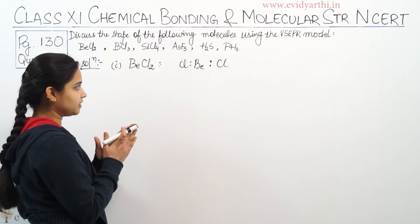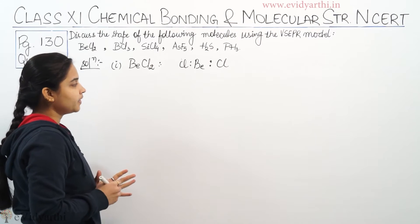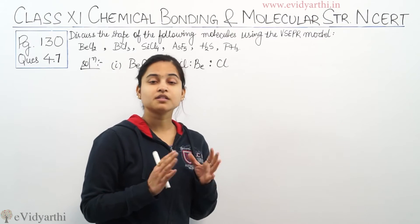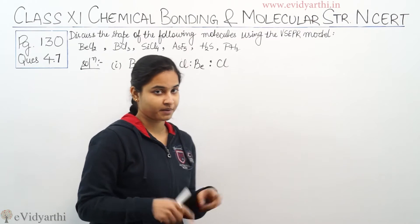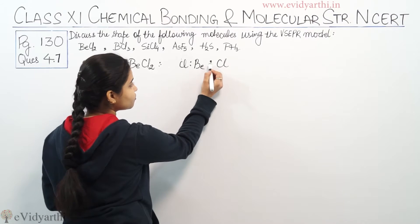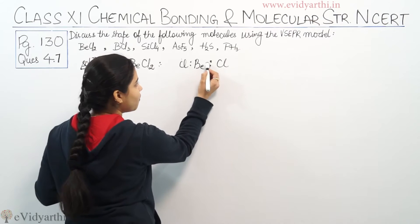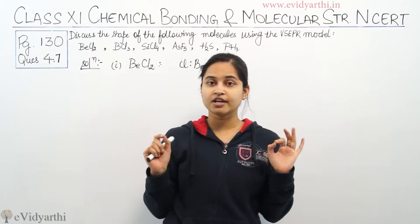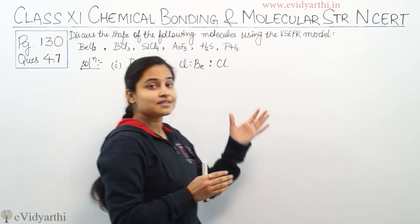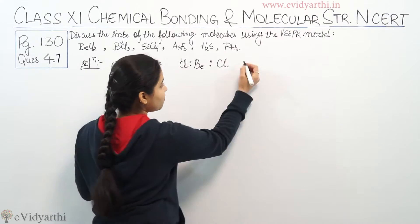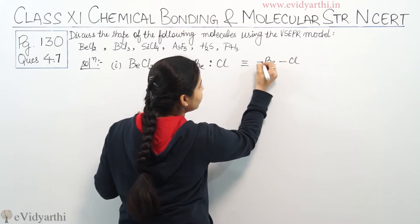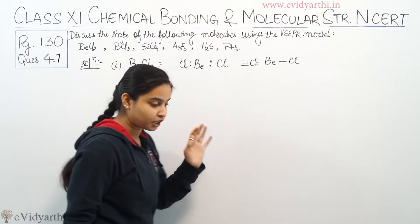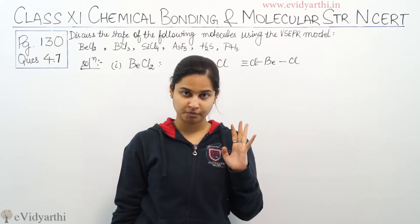The Lewis structure of BeCl₂ shows Be as the central atom with Cl on each side. On the central atom beryllium, there is no lone pair of electrons but there are two bond pairs — one bond pair on each side. So there are two bond pairs and no lone pair of electrons on the central atom. The shape of the molecule is linear.